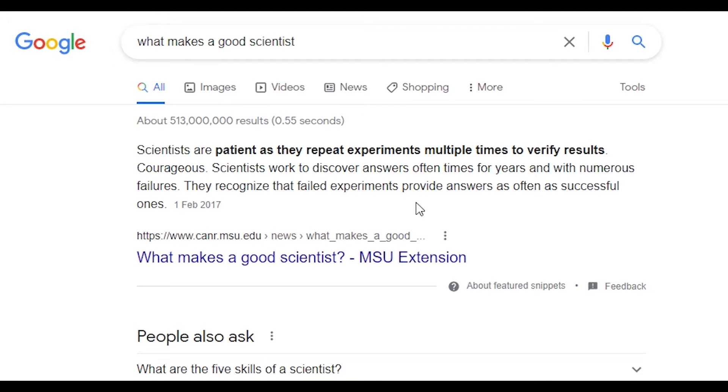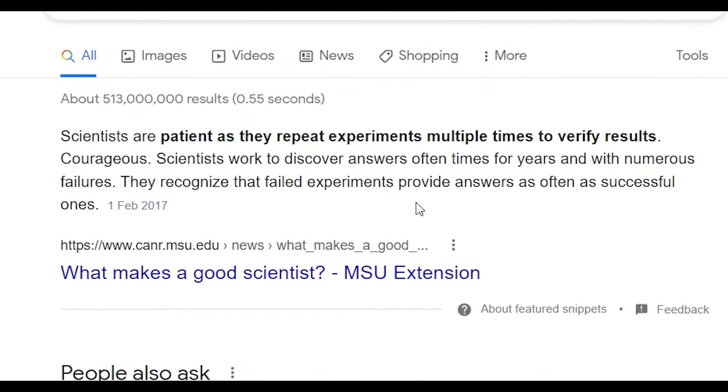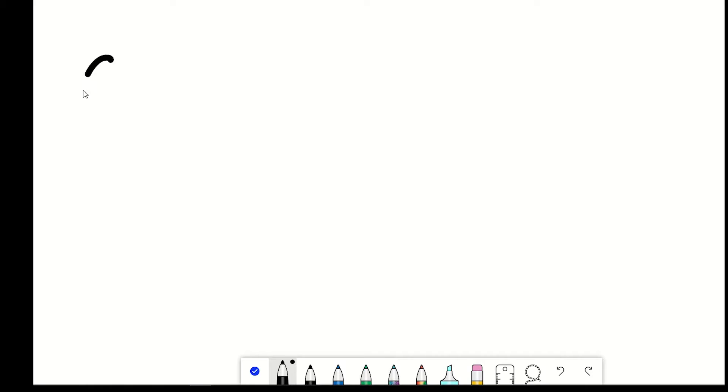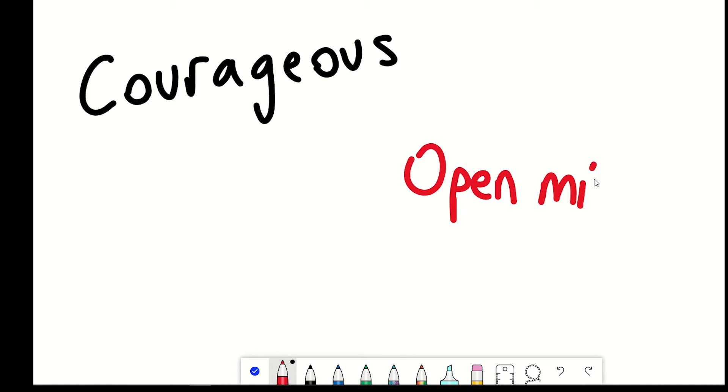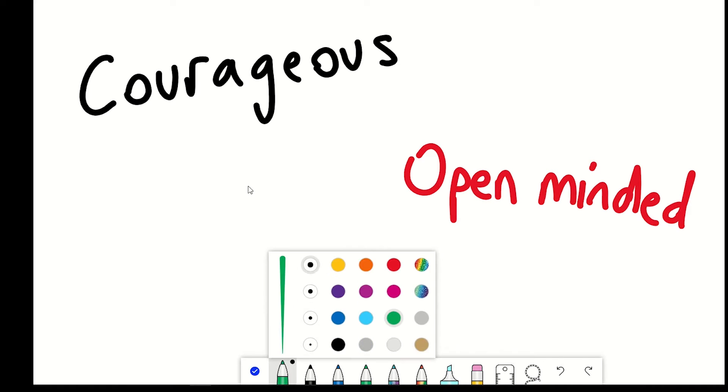Scientists are patient as they repeat experiments multiple times to verify results. We have to be courageous. We fail a lot. It must be open-minded. It's about learning from failures. But that's the things you already knew.